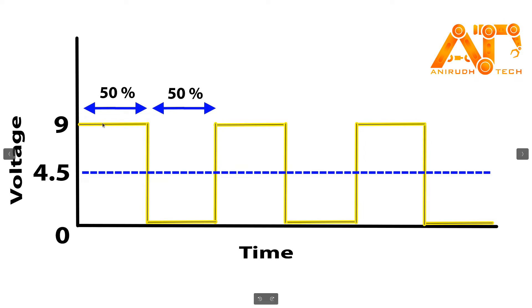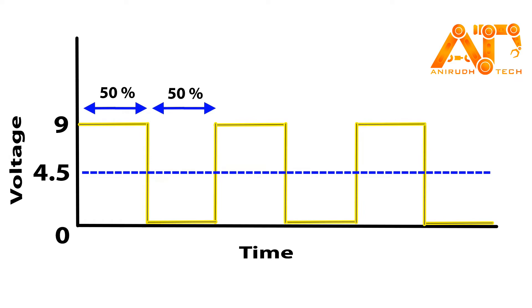You can give more voltage by changing the width of the pulse. So according to your application you can change the width of the pulse, and this way you can not only control the brightness of a bulb but also control the speed of actuators and much more.